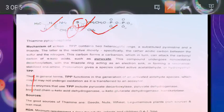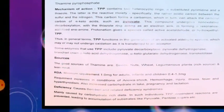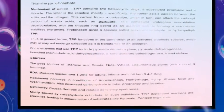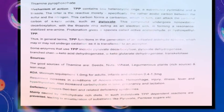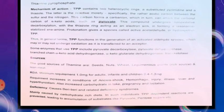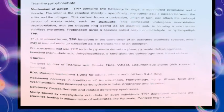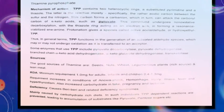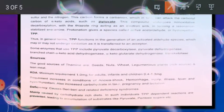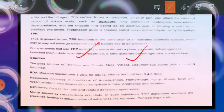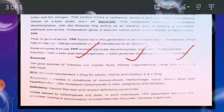In general, TPP functions in the generation of unactivated aldehyde species, which may or may not undergo oxidation as they are transported to an acceptor. Enzymes that use TPP include pyruvate decarboxylase, pyruvate dehydrogenase, branched-chain alpha-ketoacid dehydrogenase, alpha-ketoglutarate dehydrogenase, and transketolase.